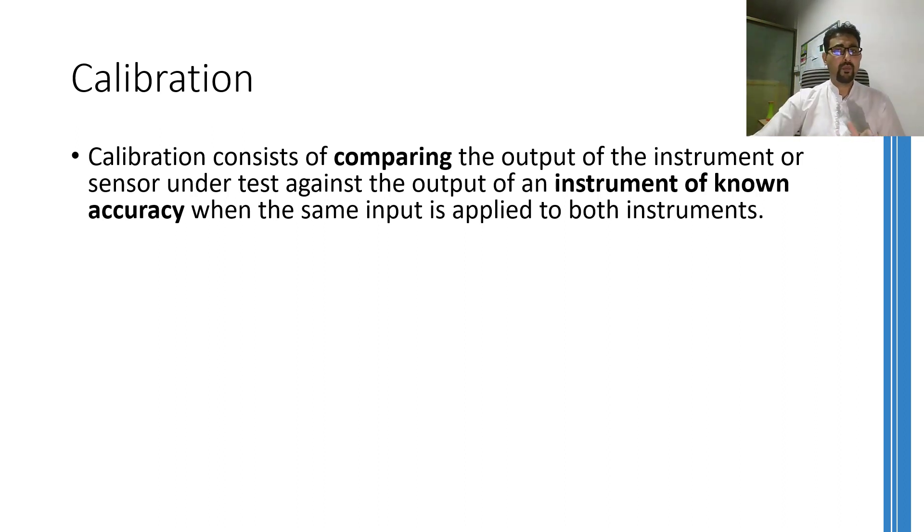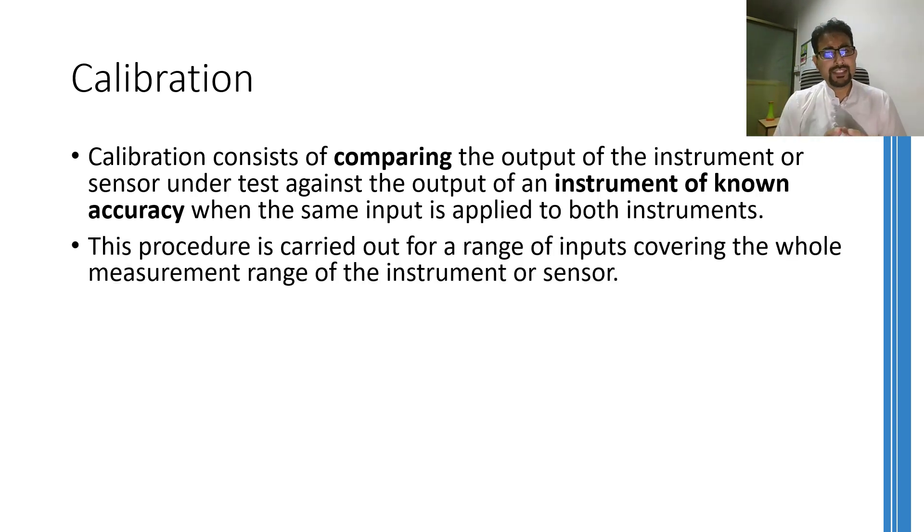If the instrument which you have installed in the factory floor shows some deviation, then it means that it needs calibration. However, if both outputs are similar or the deviation is acceptable, then the instrument can work for a bit longer. Therefore, the procedure of calibration is carried out for the whole range of inputs. It might be the case where the instrument is performing well for a certain portion of the range, but it might not be generating standard output for some other range. Therefore, when you want to check any instrument for calibration, make sure you check the whole range of the input.